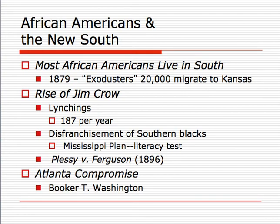For African Americans, however, what did the New South mean? Most African Americans continued to live in the South, but in 1879, because of prejudice in the South and opportunities in the West, there was a movement to move to Kansas to take advantage of free land under the Homestead Act. This became known as the Exoduster Movement. People like Pap Singleton promoted African Americans to move out of the South and find new opportunities out West. A lot of Southern states opposed this movement because they feared losing their agricultural laborers.